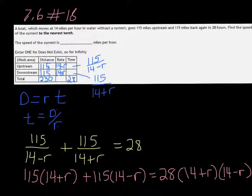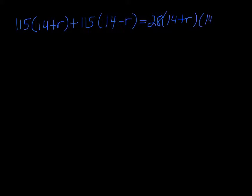That's the equation that we have to solve. I'm just going to jot it down here because I want to get a new page to make room for this beast of an equation. So 115 times 14 plus r plus 115 times 14 minus r equals 28 times 14 plus r, 14 minus r. Let's start multiplying, distributing, and cleaning this up.